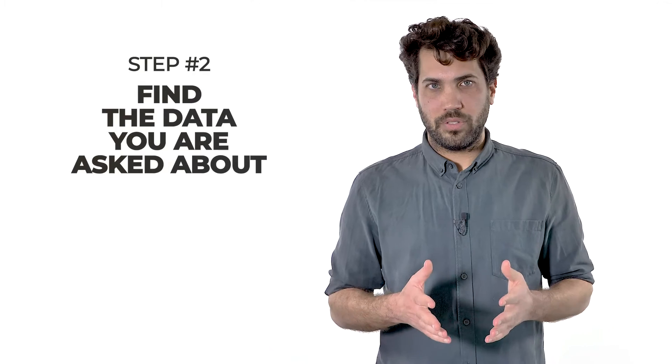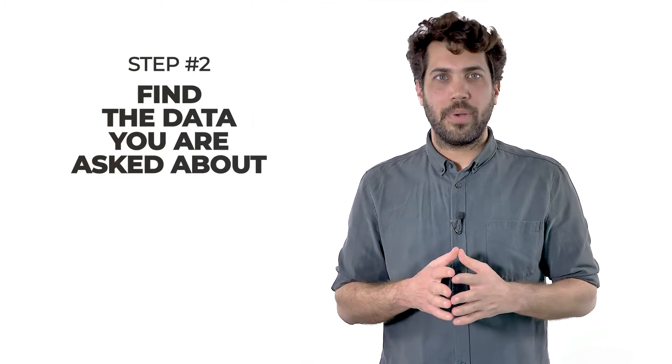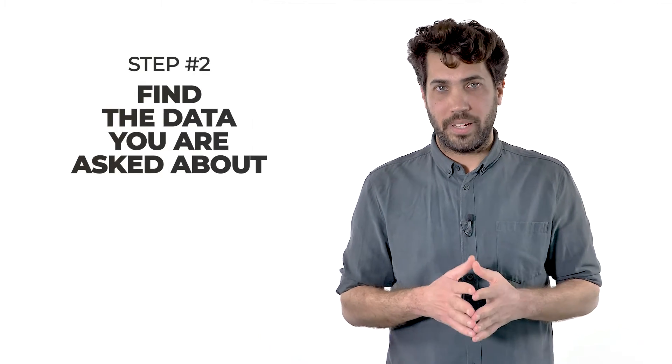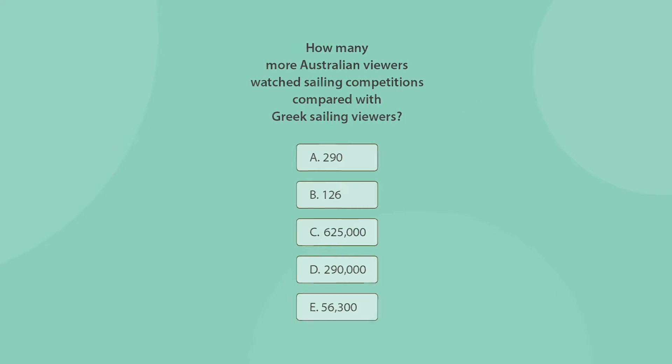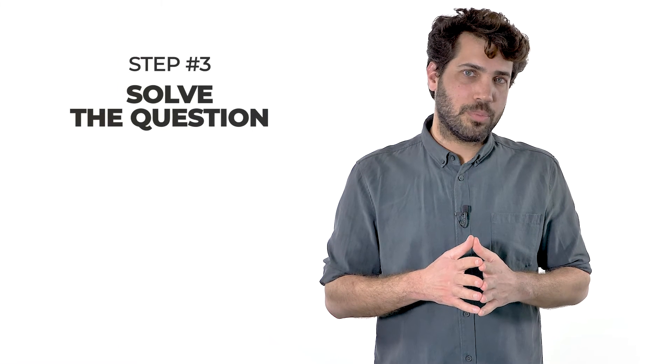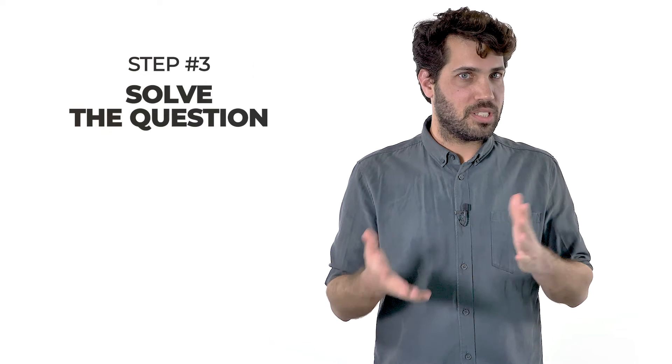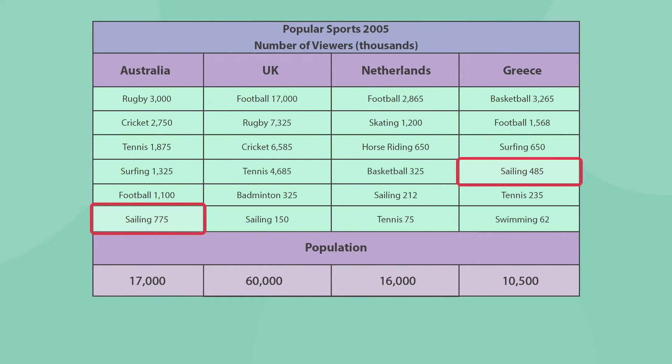Next, read every single word of the question, even twice, and make sure you understand exactly what you are being asked. We are asked about the Australian and Greek viewers, which automatically narrows the table down to two columns. In these two countries we are asked only about the sailing viewers, so we quickly skim through these two columns and find the sailing data in each. We are asked to determine how many more Australians watched sailing compared to the Greek viewers. And how do we find that? By a simple subtraction.